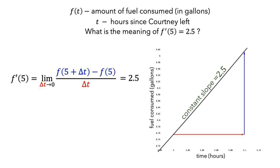So, for a sufficiently small delta t, the amount of change in f is 2.5 times as much as the amount of change in t. Now that we have all of this, let's make another attempt at explaining the meaning of f'(5) equals 2.5.